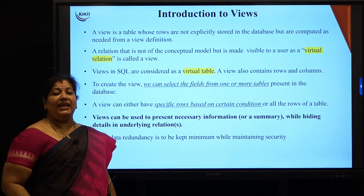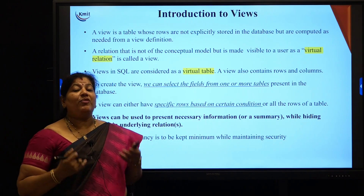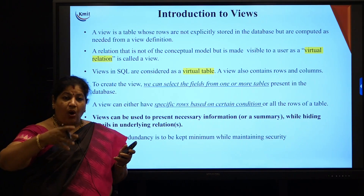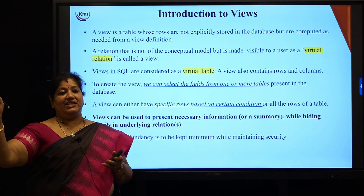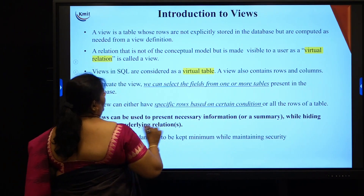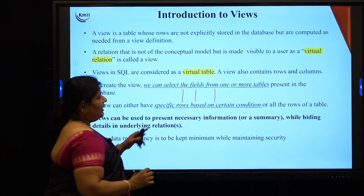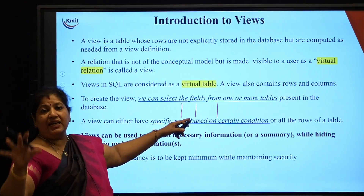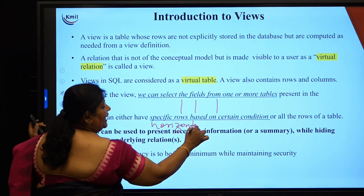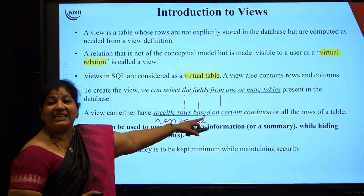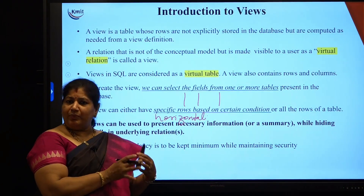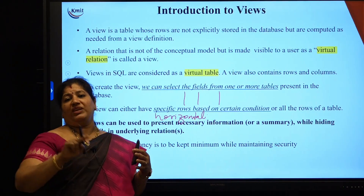I call it a table because it contains rows and columns. From where do I get these rows and columns? I can create a view by selecting columns from one or more existing tables. This is the vertical division of the tables, which will give me a view generated vertically. Horizontal division or horizontal participation is also possible, where I select the rows based on a condition.